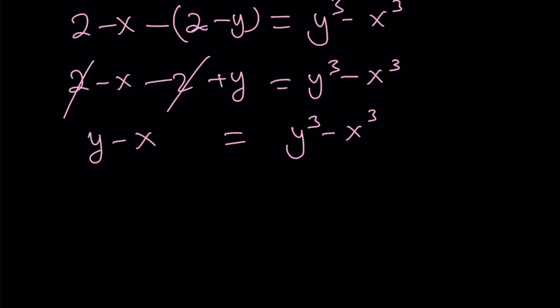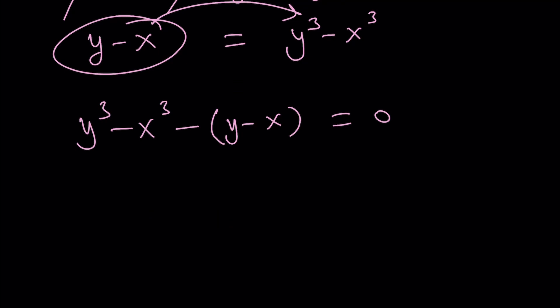Instead of that, go ahead and put everything on the same side, set it equal to 0, and factor. So here's what I'm going to do. I'm going to subtract y minus x from this expression. So it goes like this. y cubed minus x cubed minus y minus x equals 0. So let's go ahead and factor the difference of 2 cubes now. It's safer. We didn't cancel out anything. y minus x times y squared plus yx plus x squared. And y minus x can be written as 1 times y minus x because I want to get a common factor.